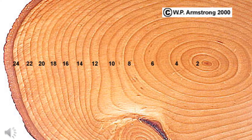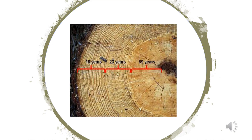Tree cookies are a simple tool for analyzing the rings on a tree. Why do you need to know the age of a tree? Using this math, scientists are able to understand and evaluate the climate during specific years throughout history.